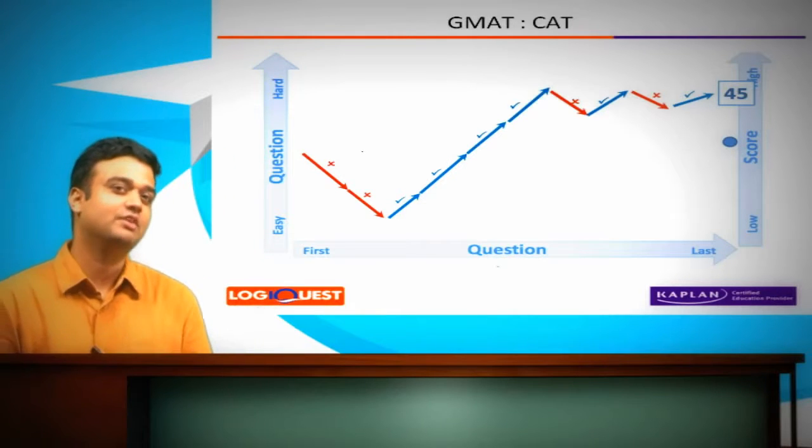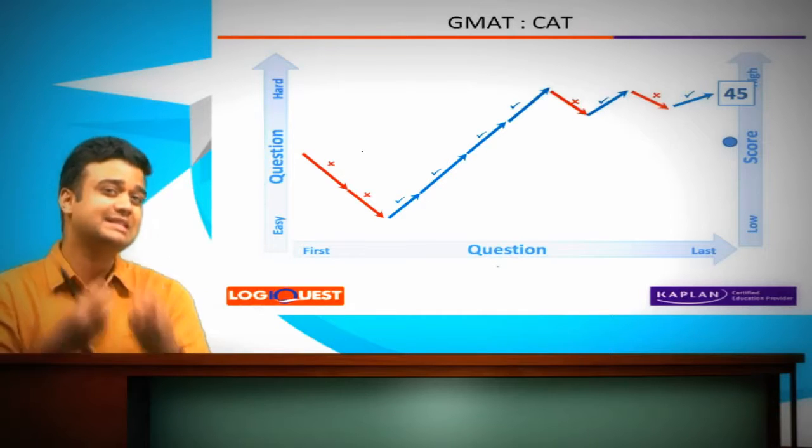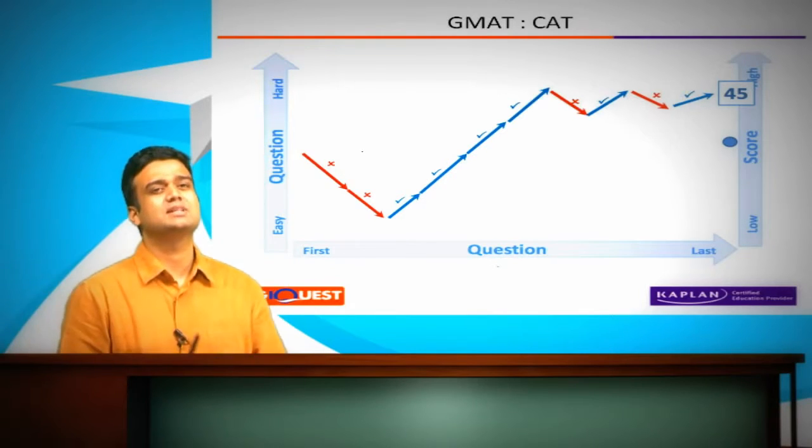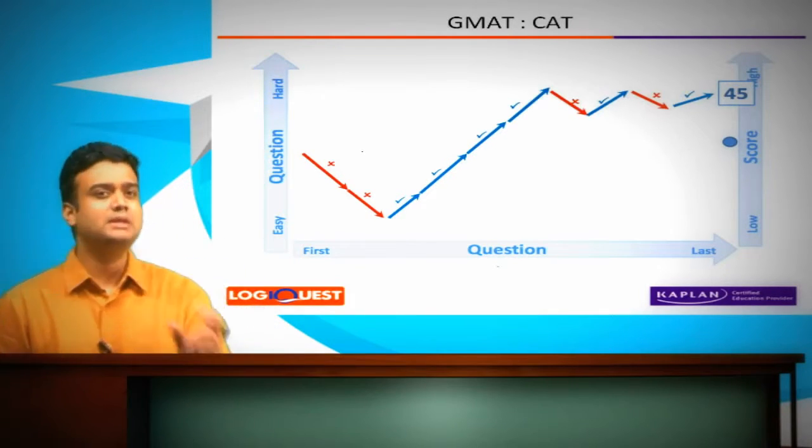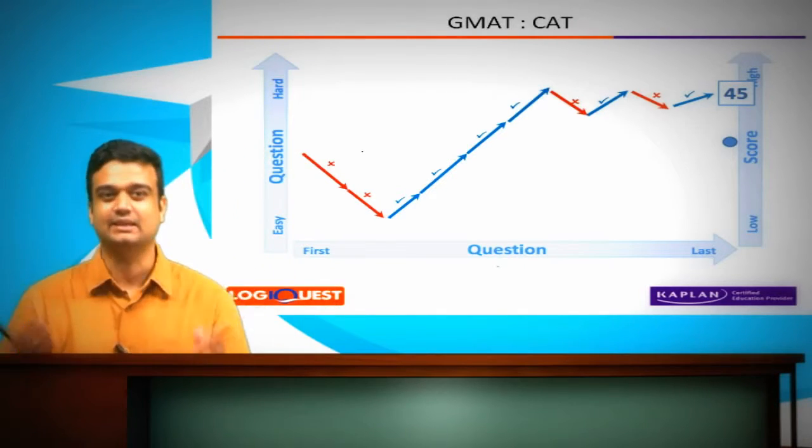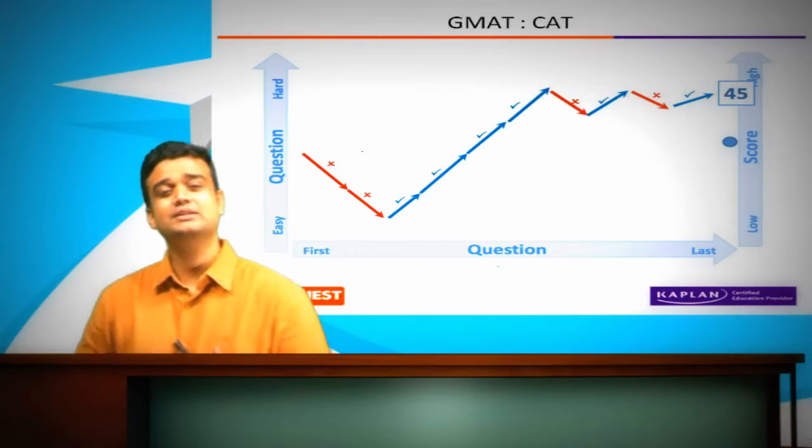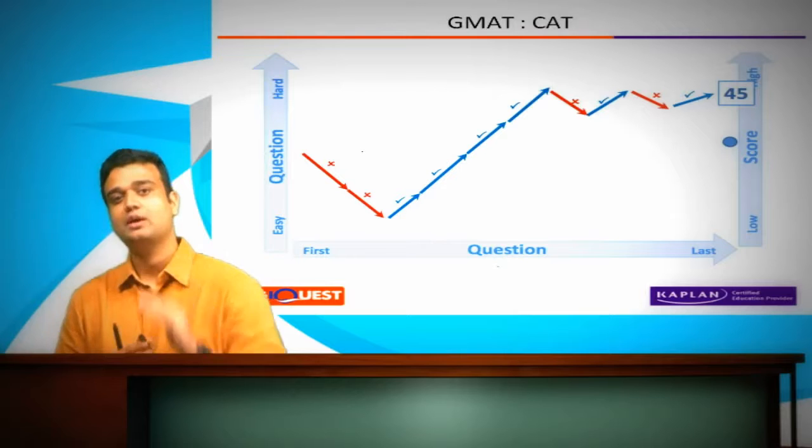And that's how each section, verbal and quant, start. The system will throw in a question that's of a moderate level, of a median difficulty level, probably a 500 or 26 in verbal. And what it's trying to do is continuously trying to assess what your upper limit is.